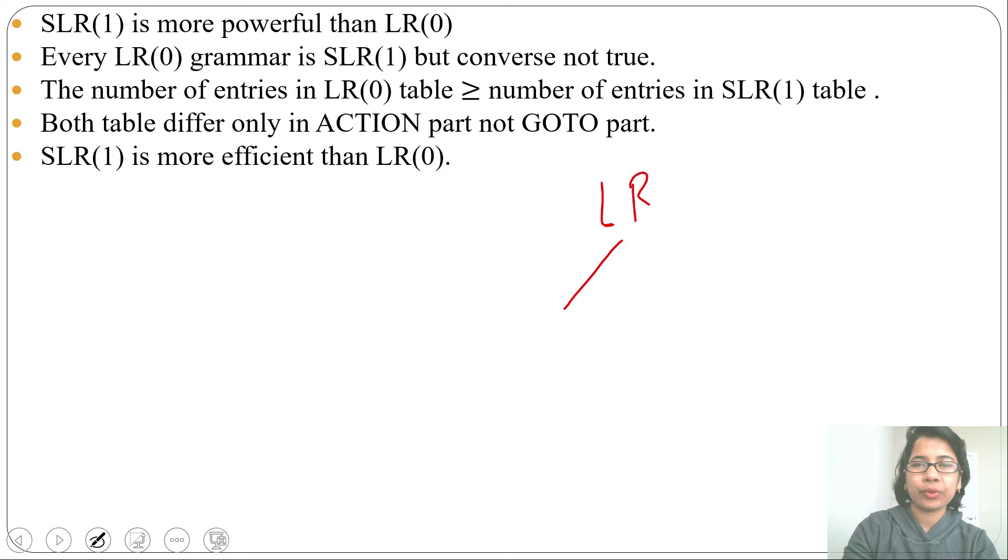LR parser is of two types according to LR0 item and LR1 item. According to LR0 item, it is LR0 parser and SLR1 parser. Then according to LR1, it is CLR1 and LALR1.